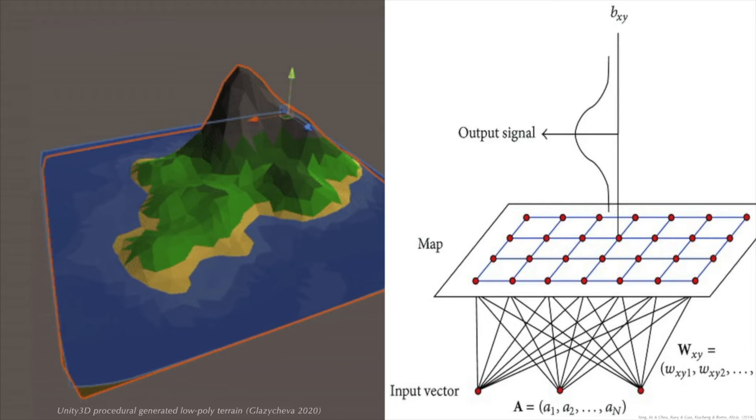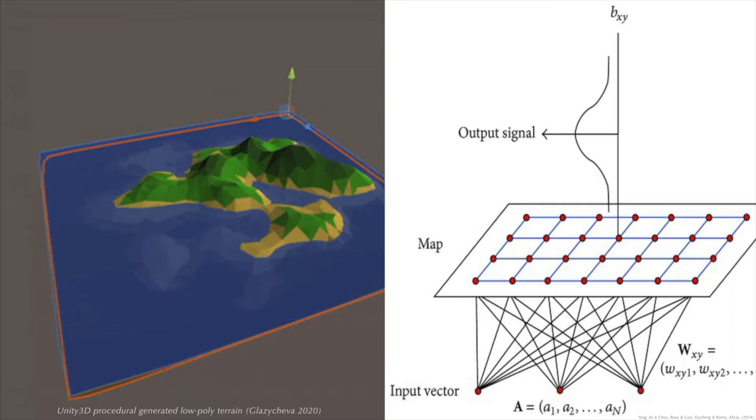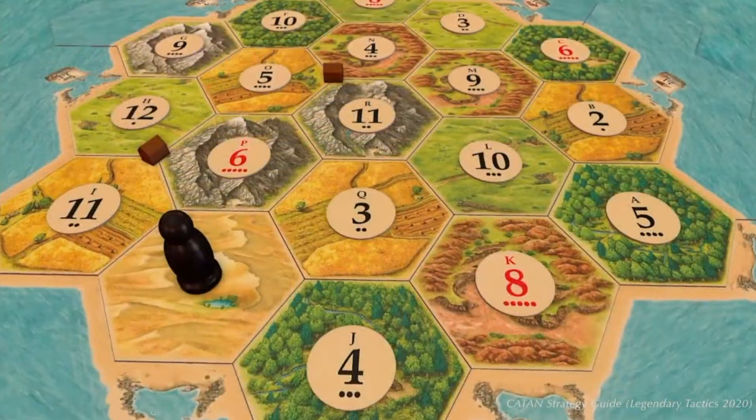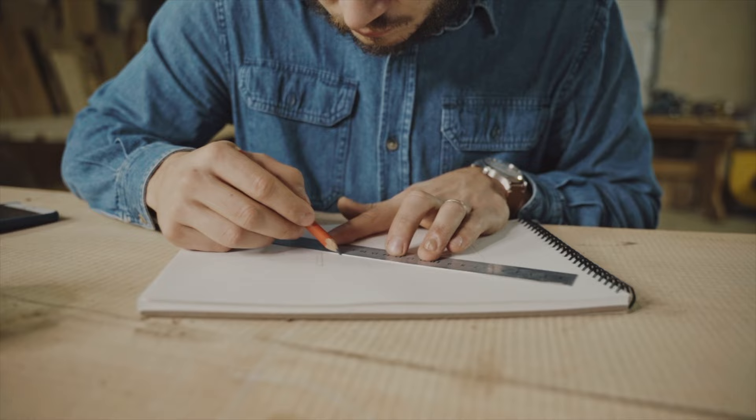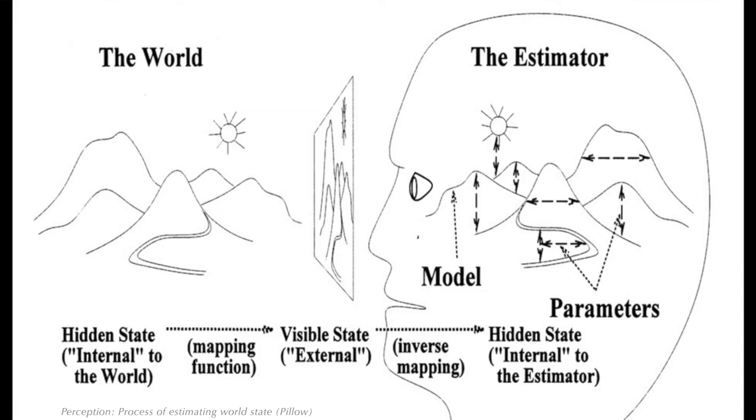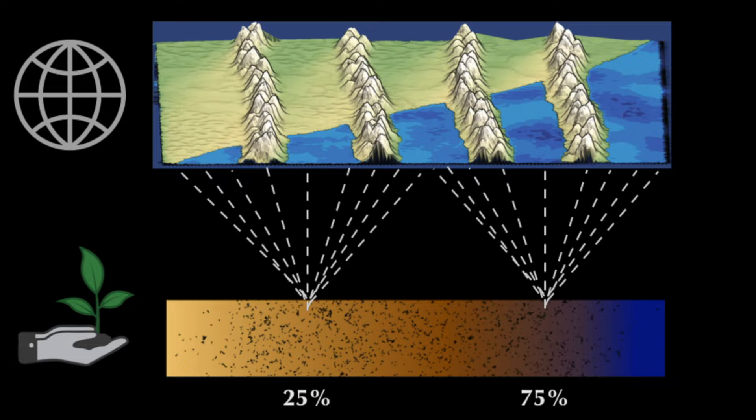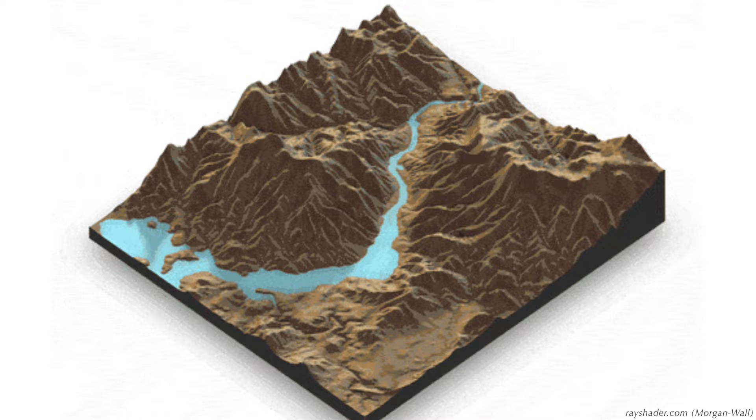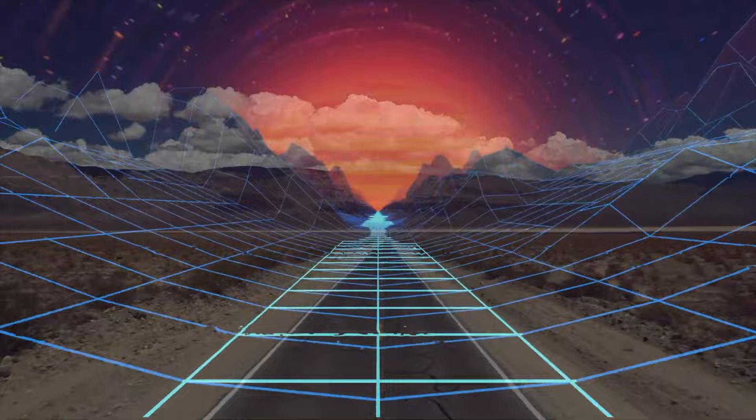We conclude with a meditation on the map-territory relationship. Hoffman would agree that, due to evolution by natural selection, the map is better than the territory. So I leave you with a quote from the late great Gregory Bateson. We say the map is different from the territory. But what is the territory? Operationally, somebody went out with a retina or a measuring stick and made representations which were then put on paper. What is on the paper map is a representation of what was in the retinal representation of the man who made the map. And as you push the question back, what you find is an infinite regress, an infinite series of maps. The territory never gets in at all. Always the process of representation will filter it out so that the mental world is only maps of maps. Ad infinitum.